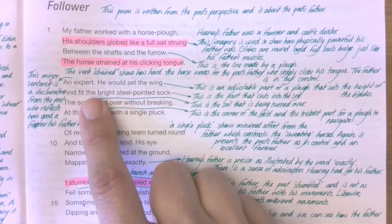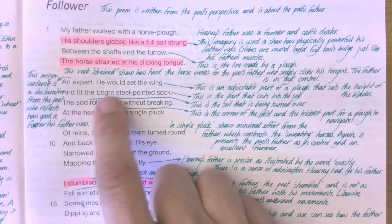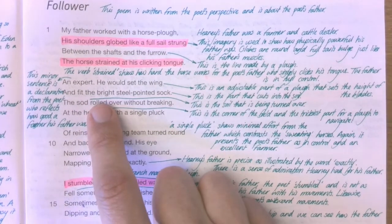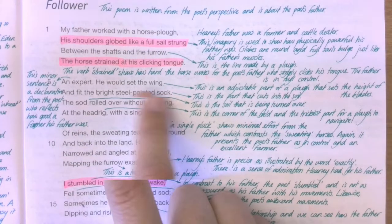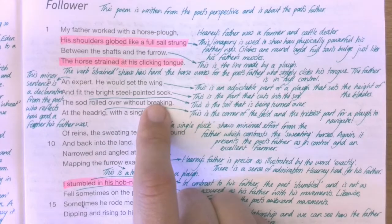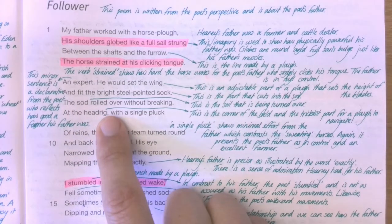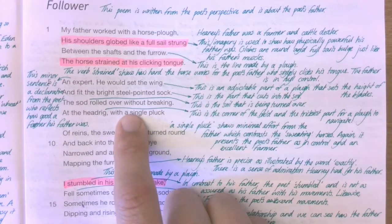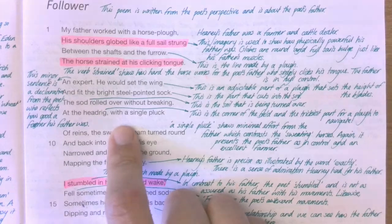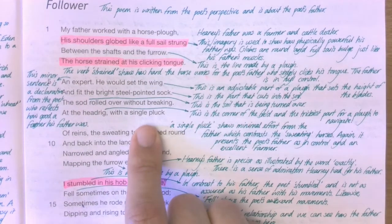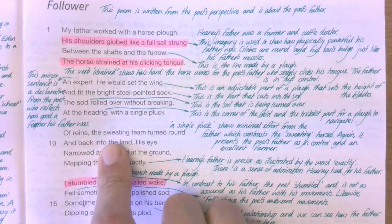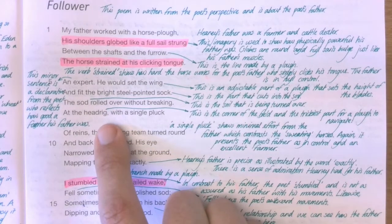That minor sentence — 'An expert' — is just a declaration from the poet. There's no room for argument; it reflects how good a farmer his father was. He would 'set the wing' — the adjustable part of the plow that sets the blade height — and 'fit the bright steel-pointed sock,' the part that cuts the soil. 'The sod rolled over without breaking,' and at the headrig — the corner of the field, the trickiest part — he turned the plow 'with a single pluck' of reins.